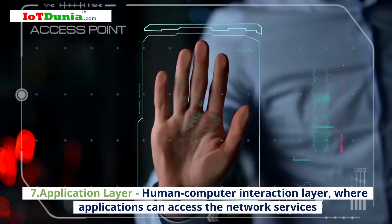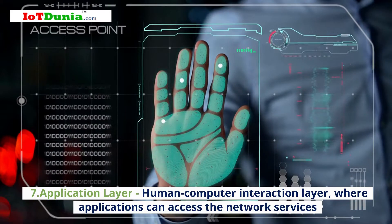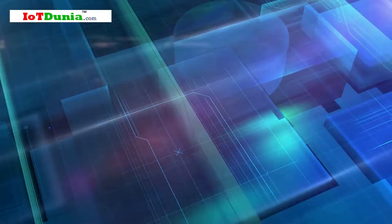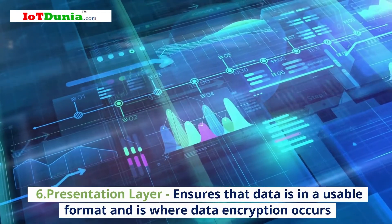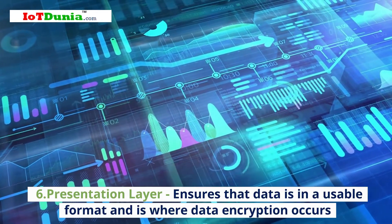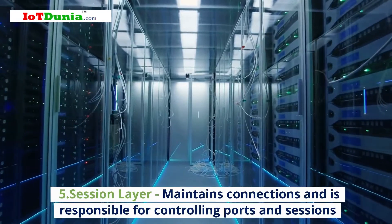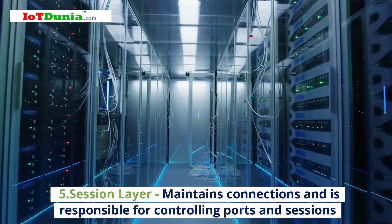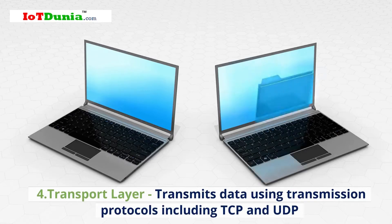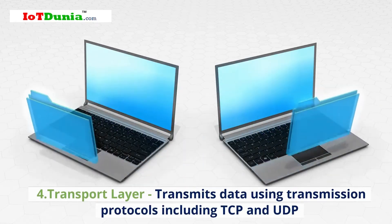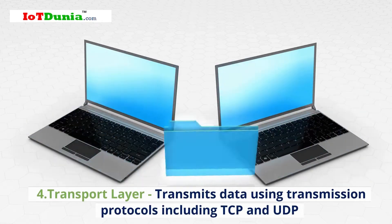Layer 7: Application layer — the human-computer interaction layer, where applications can access the network services. Layer 6: Presentation layer — ensures that data is in a usable format and is where data encryption occurs. Layer 5: Session layer — maintains connections and is responsible for controlling ports and sessions. Layer 4: Transport layer — transmits data using transmission protocols including TCP and UDP.